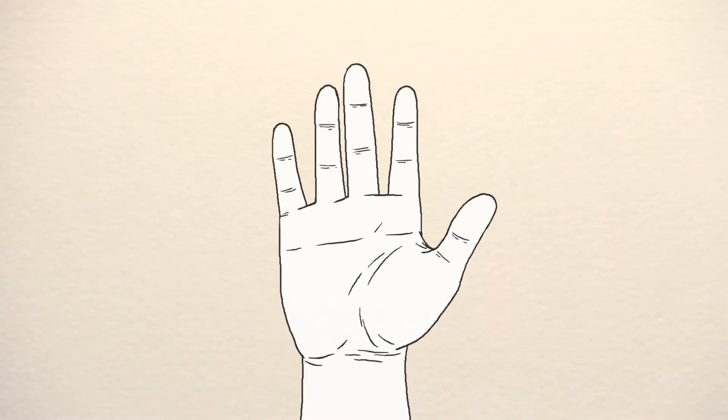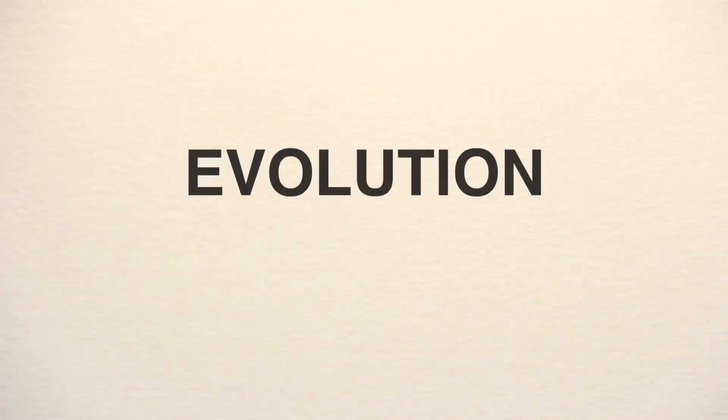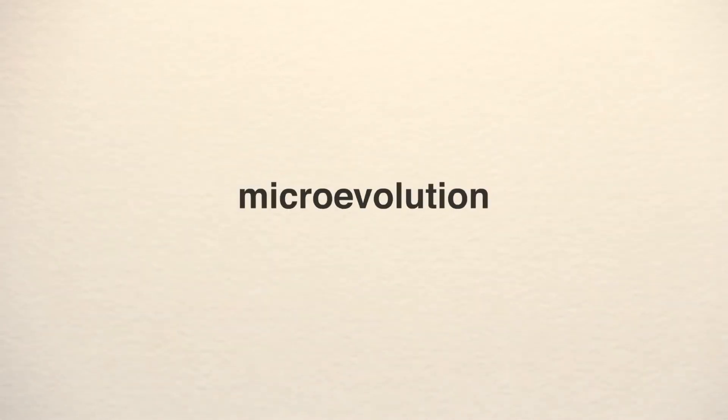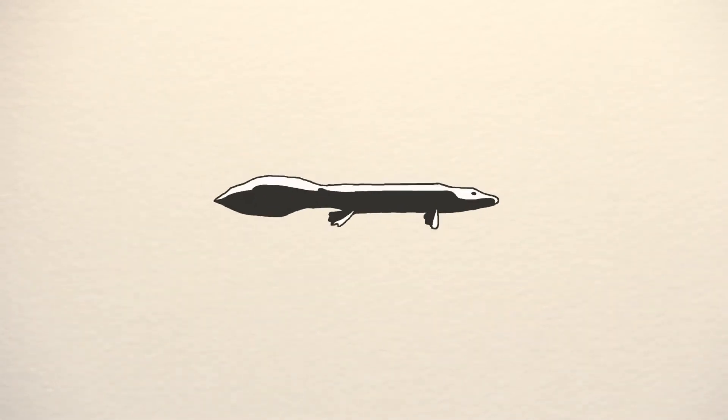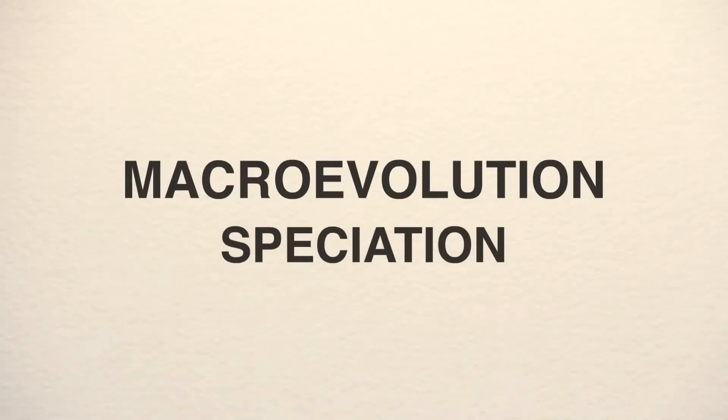Even the thumb itself is an adaptation formed through the process of natural selection. The evolution that we have described is referred to as microevolution because it refers to a small change. However, this form of evolution may eventually lead to macroevolution or speciation.